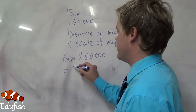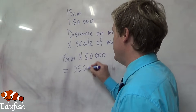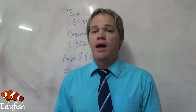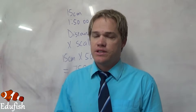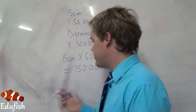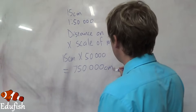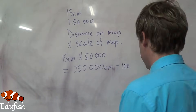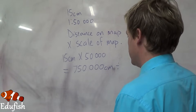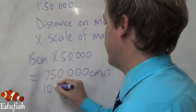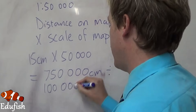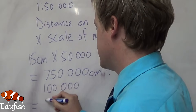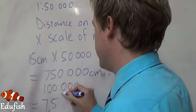This gives you an answer of 750,000 cm. Now you are never going to say to your friends, 'I ran 750,000 cm yesterday.' You are going to convert this to kilometers by dividing by 100,000, and it will give you an answer of 7.5 km.